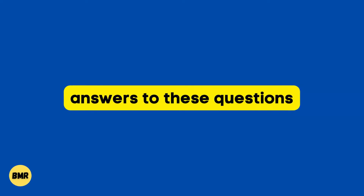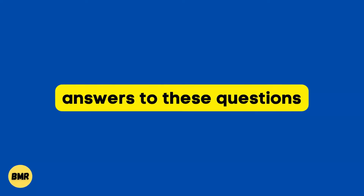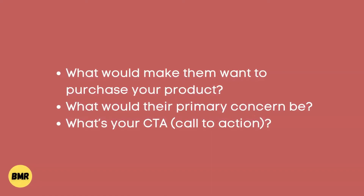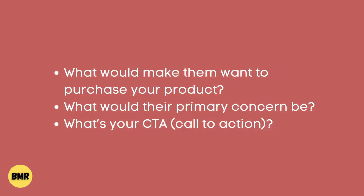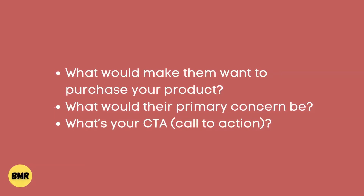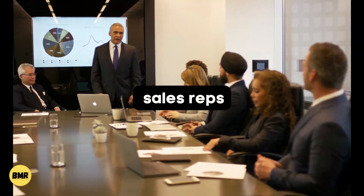Your marketing effort should be shaped by answers to these questions: What would make them want to purchase your product? What is your target audience thinking and why will they prefer to buy? What would their primary concern be — what are they looking for? For example, in winter or summer seasons in Pakistan, electricity problems sometimes arise, so battery-operated or solar-powered items are in demand. You have to understand the need of your audience. What's your CTA — call to action — and what kind of action would you like your audience to take?